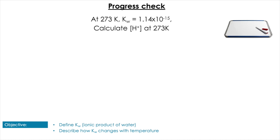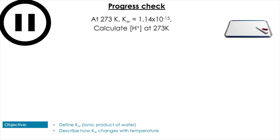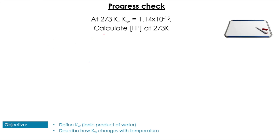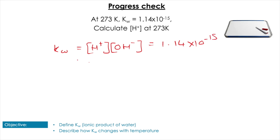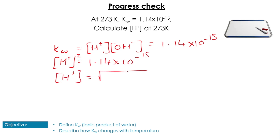Next question: calculate the [H⁺] concentration at 273 K, where Kw = 1.1 × 10⁻¹⁵. Pause the video. Using the same process: [H⁺]² = 1.1 × 10⁻¹⁵, so [H⁺] = √(1.1 × 10⁻¹⁵) = 3.38 × 10⁻⁸ mol dm⁻³.